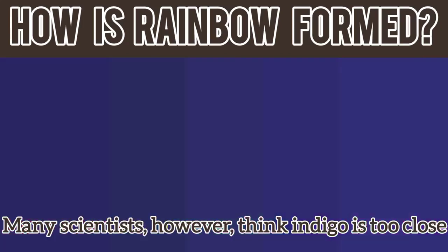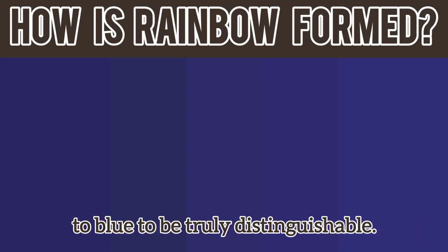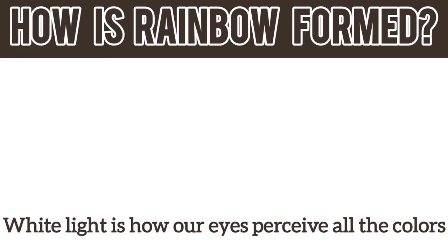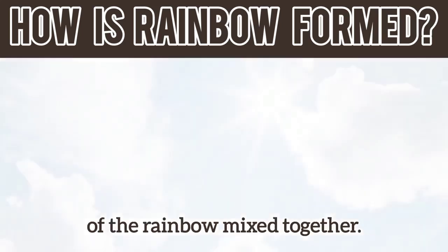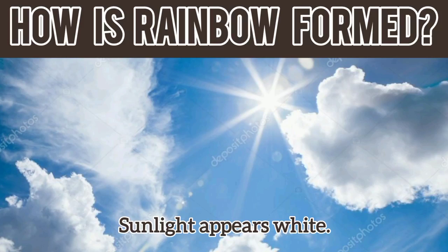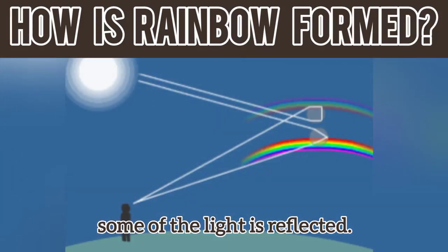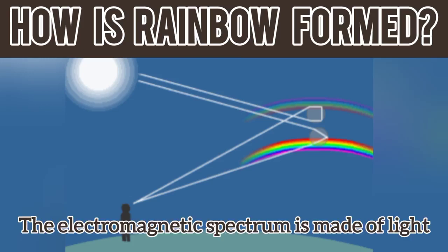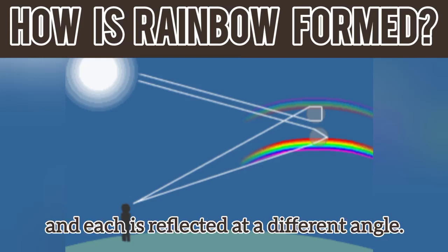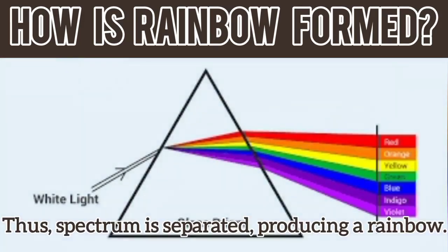Many scientists, however, think indigo is too close to blue to be truly distinguishable. White light is how our eyes perceive all the colors of the rainbow mixed together. Sunlight appears white. When sunlight hits a rain droplet, some of the light is reflected. The electromagnetic spectrum is made of light with many different wavelengths, and each is reflected at a different angle. Thus, the spectrum is separated, producing a rainbow.